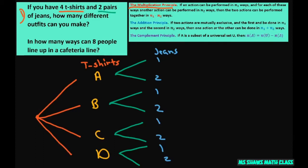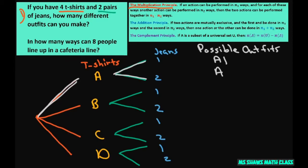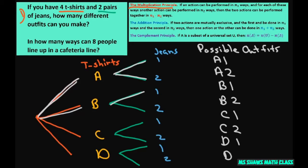For our leaves we're going to list our possible outfits. So we have a1, a2, b1, b2, c1, c2, d1, d2. You count those up and that's eight — so you have eight possible outfits.